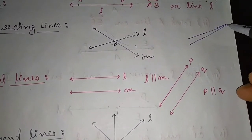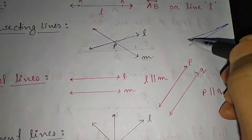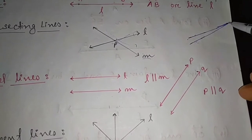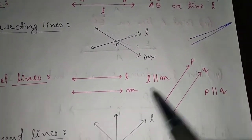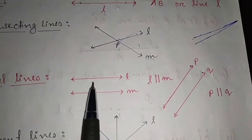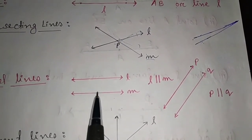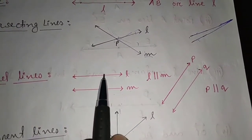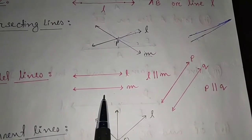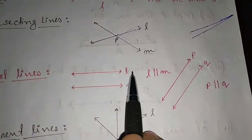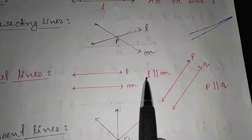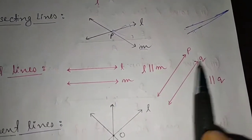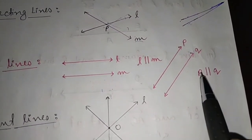If you draw lines that are not at equal distance, at some point they will meet, so those lines are not parallel. Parallel lines are those which are at the same distance and never meet each other. We represent this as L parallel M — this is the parallel symbol. Similarly, P parallel Q. This is the symbol of parallel lines.